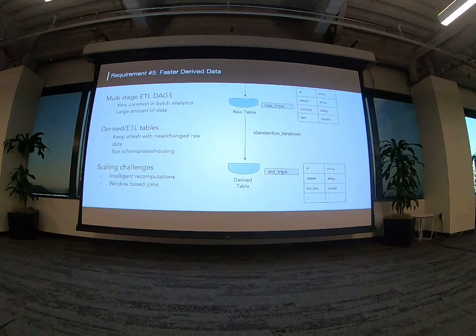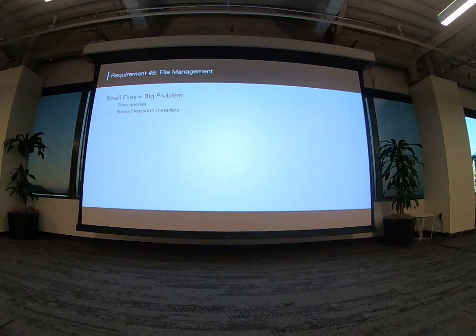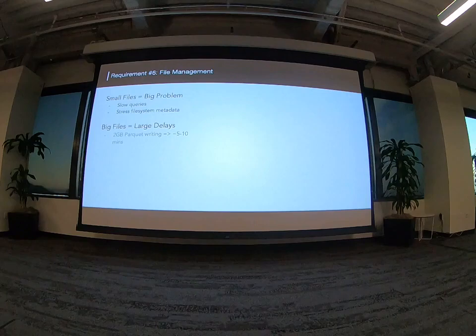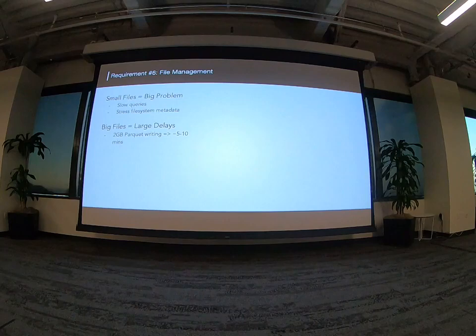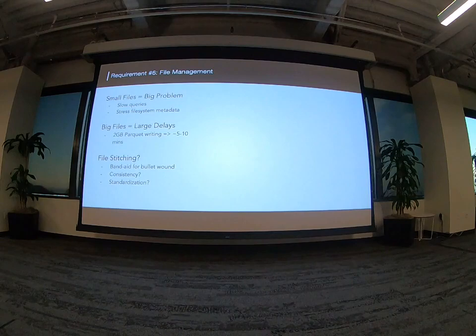What was a single-step process is now two stages, which adds latency. You need to figure out a way to keep the derived table up-to-date and fresh. There are scaling challenges — how do you derive this data without recomputing everything and wasting resources? You have to intelligently recompute derived data based on exactly what changed in the source. Small files are also a big problem because they cost a lot of overhead to query engines and stress the file system metadata. Even on cloud stores, too many small files will stress the name node.